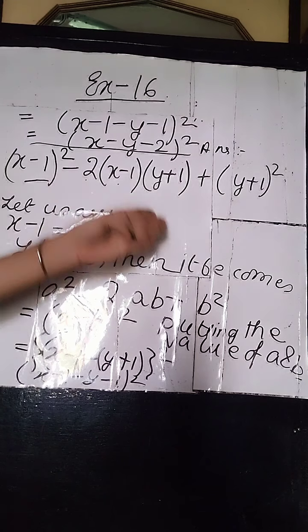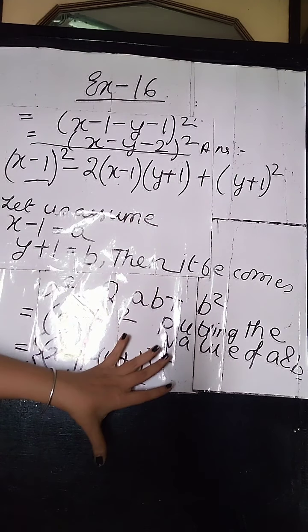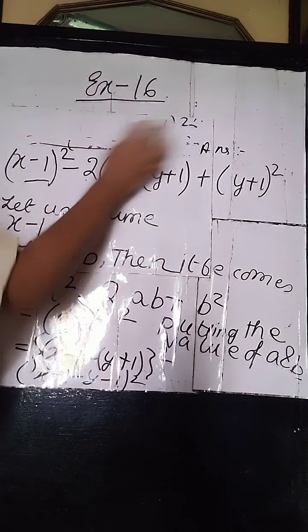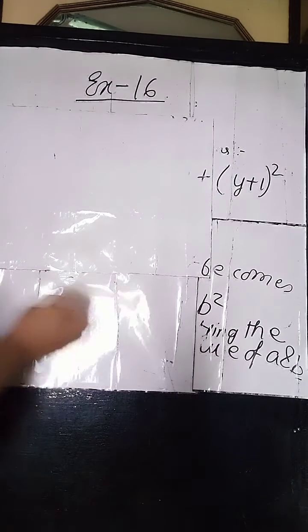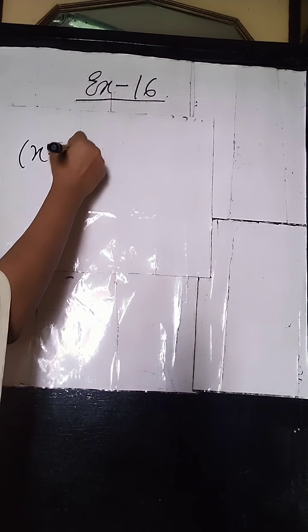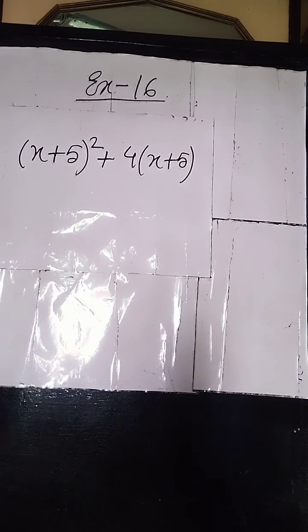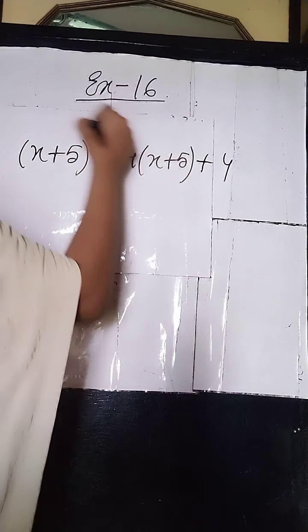I hope you have understood. Now we will do sum number 12. We will apply the same formula and the same method — assuming something as A and solving the sum. In sum number 12, it is given: x plus 5 whole square, plus 4 into x plus 5, plus 4.